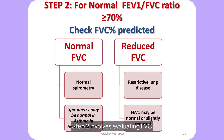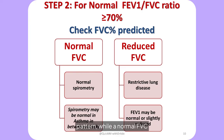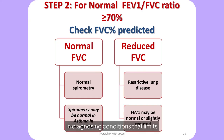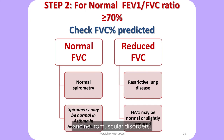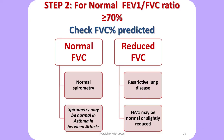Step two involves evaluating FVC when the FEV1/FVC ratio is normal, to differentiate between normal spirometry and a restrictive pattern. A reduced FVC percent predicted below 80% suggests a restrictive pattern, while a normal FVC indicates normal spirometry. This differentiation is key in diagnosing conditions that limit the lung's ability to expand, such as interstitial lung disease, obesity, kyphoscoliosis, and neuromuscular disorders. To differentiate between lung fibrosis and extrapulmonary conditions like obesity, lung volumes and DLCO testing will be required.